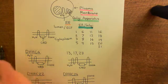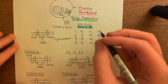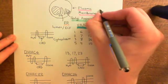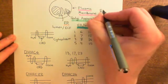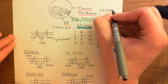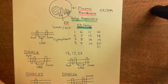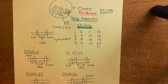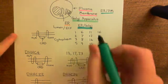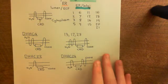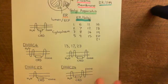Some are present in both the ER and the plasma membrane — I'll abbreviate plasma membrane to PM — and we'll highlight these in turquoise. So now we have all 23 different DHHC enzymes written out in front of us. Let's color code them for where they are actually present.